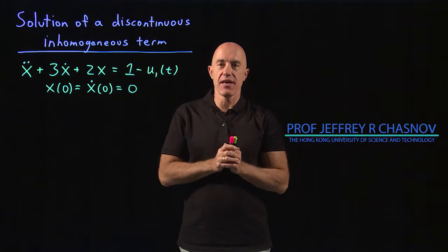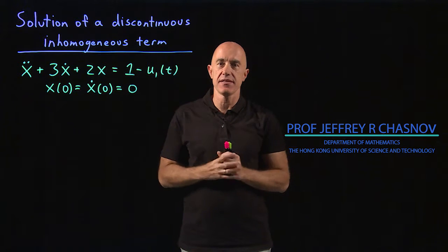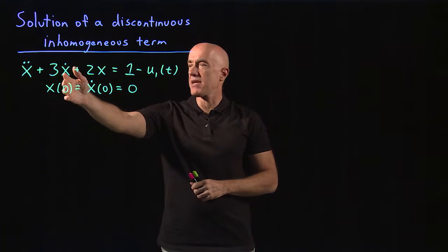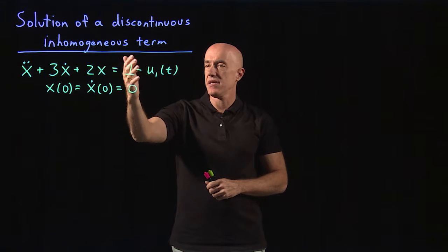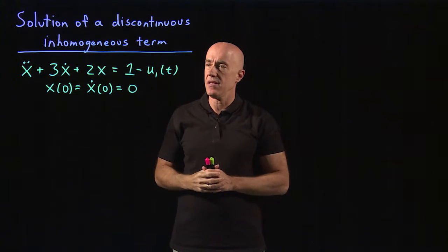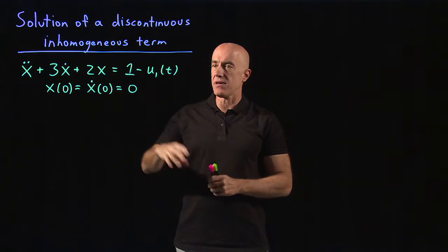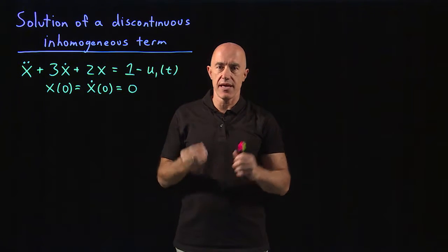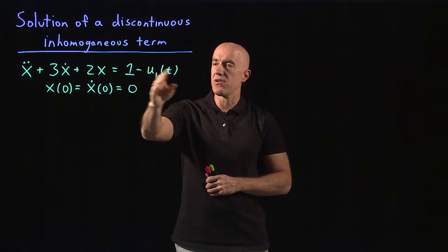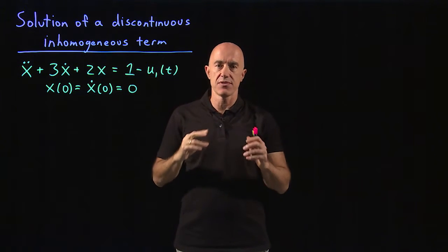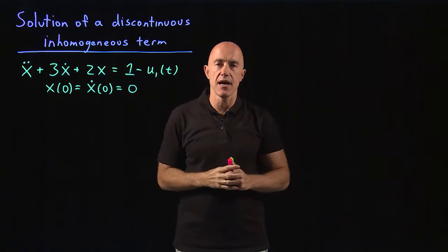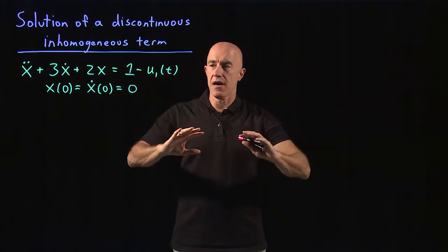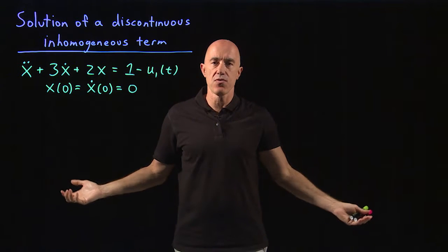Now let's try and solve a differential equation with a discontinuous inhomogeneous term. The differential equation is x double dot plus 3x dot plus 2x equals 1 minus u sub 1 of t. The right hand side makes use of the Heaviside step function. When t is less than 1, the right hand side is 1 — a constant. When t is greater than 1, the right hand side becomes 0. So if you view the right hand side as a force being applied, this is a constant force up until t equals 1, and then the force disappears.